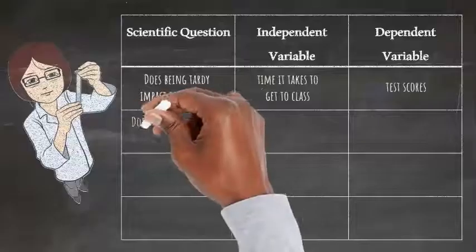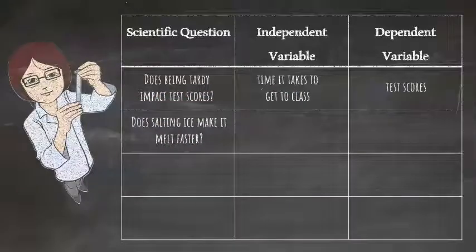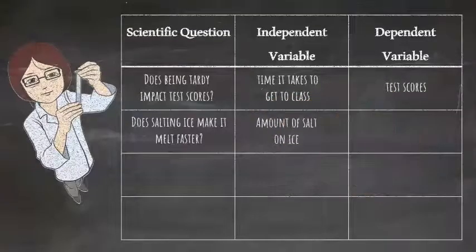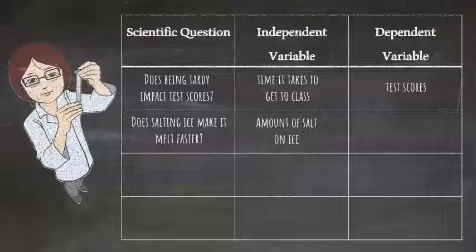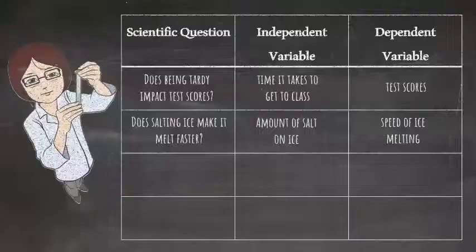What about the question, does salting ice make it melt faster? What we have control over is the amount of salt we put on the ice, and that causes a change in the speed of the ice melting. In other words, the speed of the ice melting depends on the amount of salt on the ice.